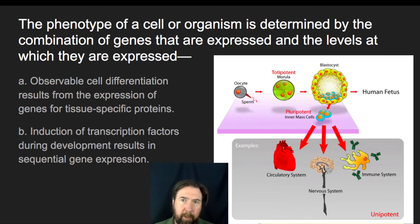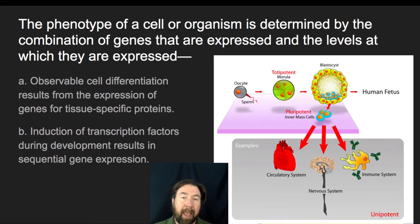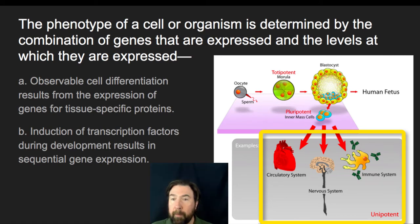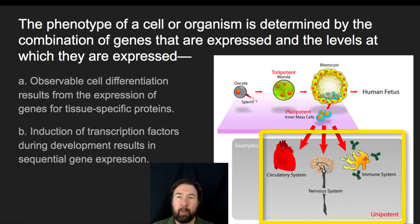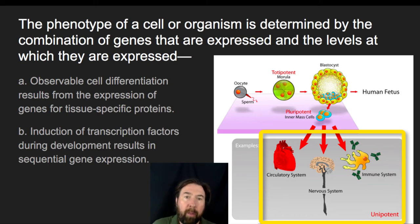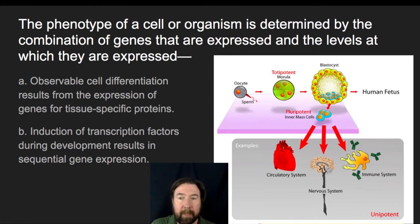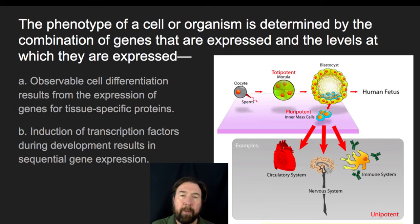From those broad tissue layers, we further determine specific tissue types — whether they become part of the circulatory system, the nervous system, or the immune system. Only specific genes will be turned on to lead to those cell destinies, and then other genes are turned on to have those cells function in their ultimate role. Throughout the entire process from fertilization to differentiation, there is a series of genes being turned on or turned off, and the ultimate expression of those cells is due to varying gene expression throughout this process.